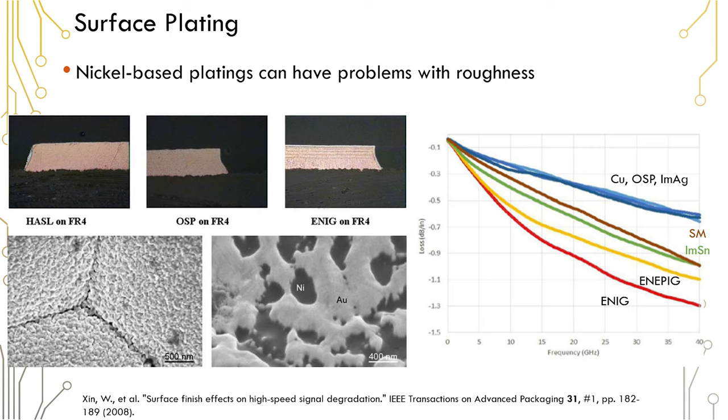So should you use immersion silver? Well one of the problems with immersion silver is that it tarnishes. What about OSP? One of the problems with OSP is that it has a short shelf life. So you need to weigh your different options when you're looking for an appropriate plating for an RF board. I would suggest immersion tin as one alternative if you are using very lossy solder mask. Of course the other option is to just go with a lower loss solder mask.